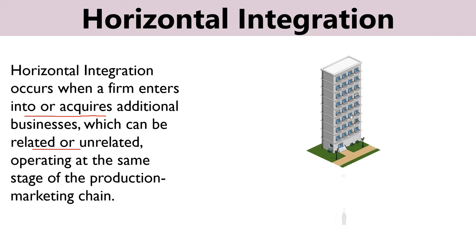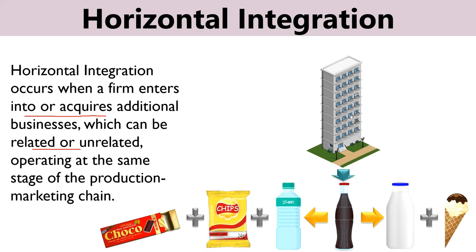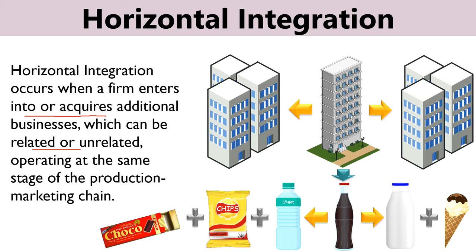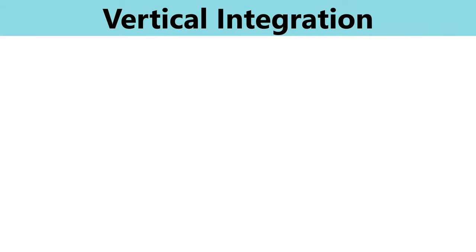Horizontal integration can take place in two ways: when a firm enters into a new market by adding complementary products within its existing product range, or by acquiring competing businesses. It is a competitive strategy which results in economies of scale, increased market power over distributors and suppliers, increased product differentiation, reduction in competition, and increase in market share by expansion of the product lines with more varieties to cater to customers in different segments.